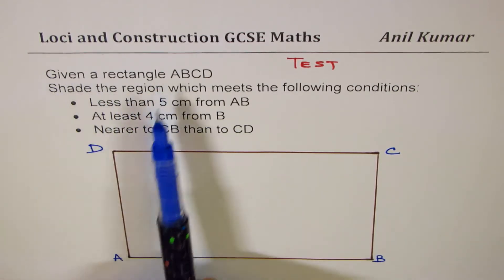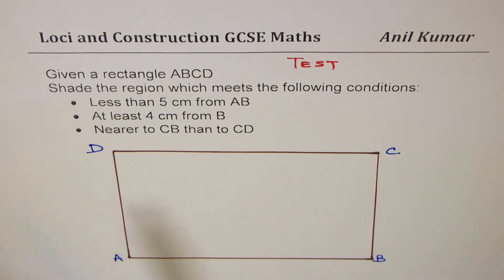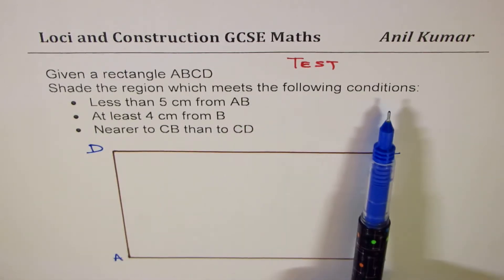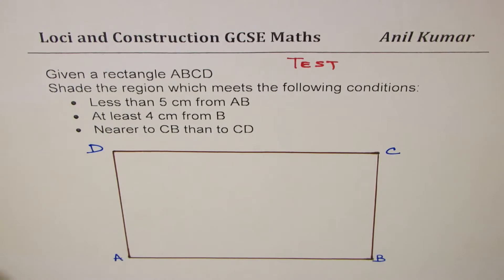We are given a rectangle ABCD. You need to shade the region which meets the following conditions. Three conditions are given to us.